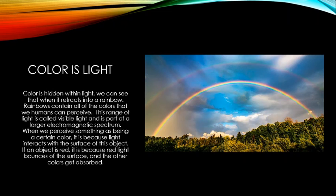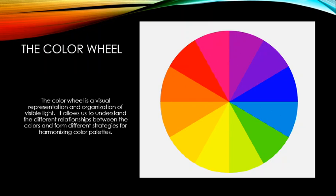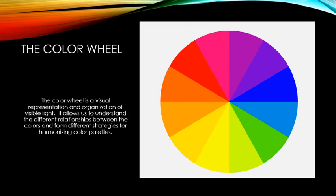The color wheel is a visual representation and organization of the visible light spectrum. It allows us to understand the relationships between colors and form strategies for harmonizing a palette. It's like a rainbow put into a circle — red blending into purple, into blue, into green, into yellow, into orange, and back to red. It's an artificial construction, but it helps us understand color relationships and develop methods for harmonizing colors.